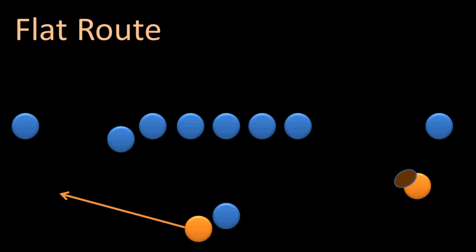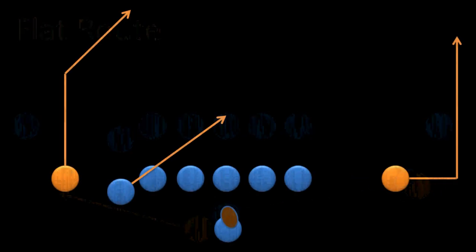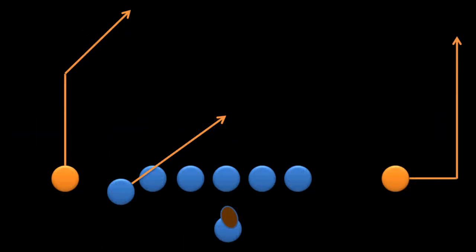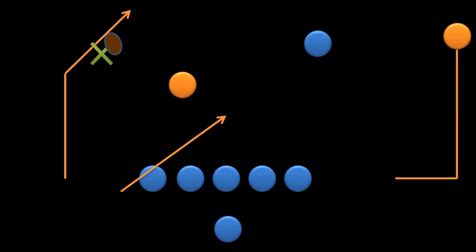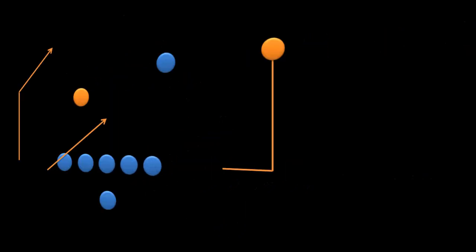Now, there are no rules that prohibit the wide receivers from running any type of route. As long as they stay in bounds, they can go anywhere they want. But the wide receivers have to be careful because if they stray too far from the play that is called, it might throw the quarterback off enough that he'll throw the ball where the receiver was supposed to be rather than where he went. And that wouldn't be a good thing.